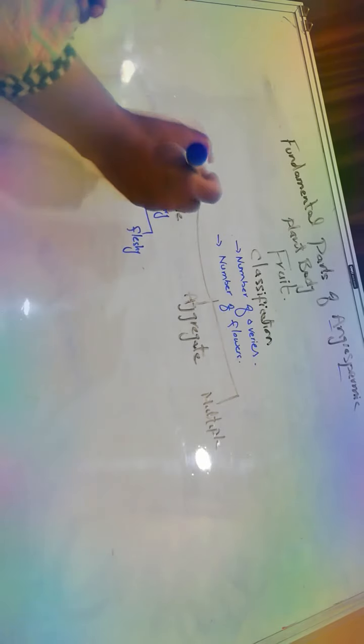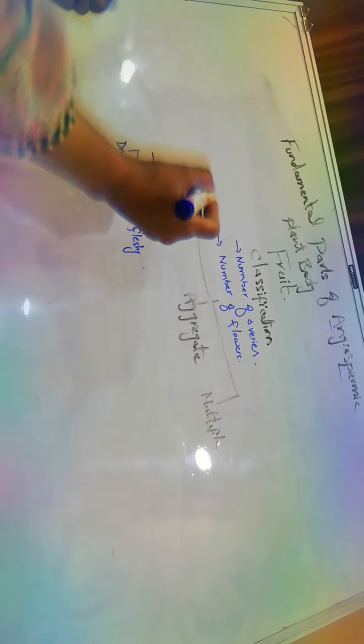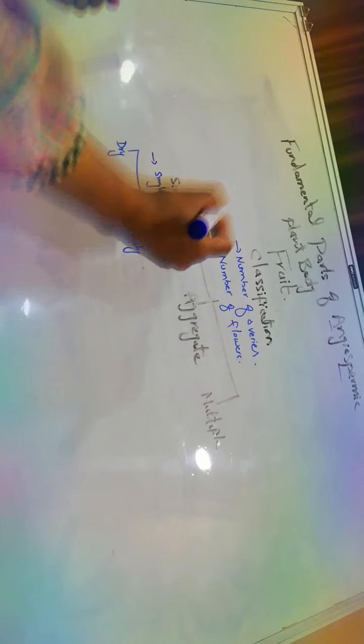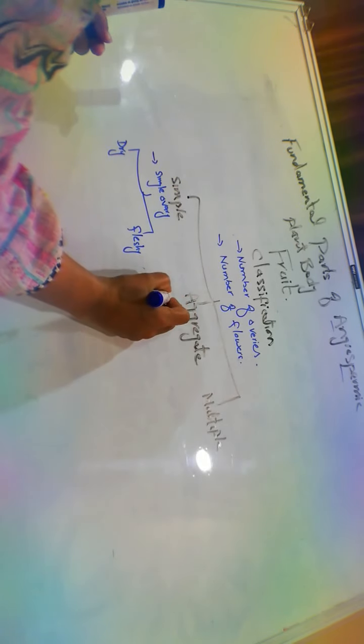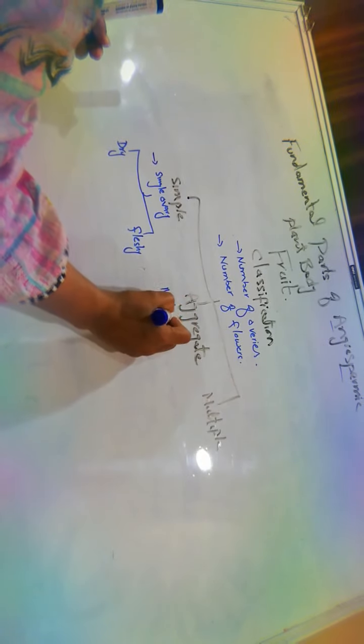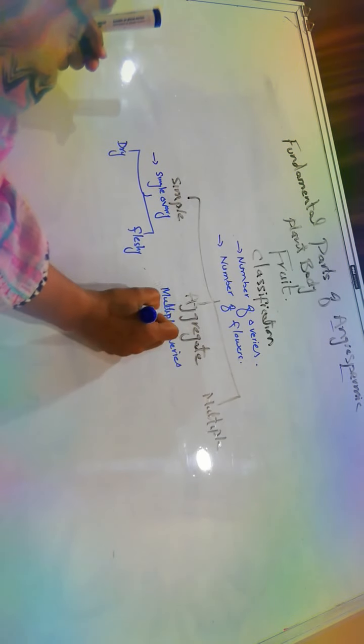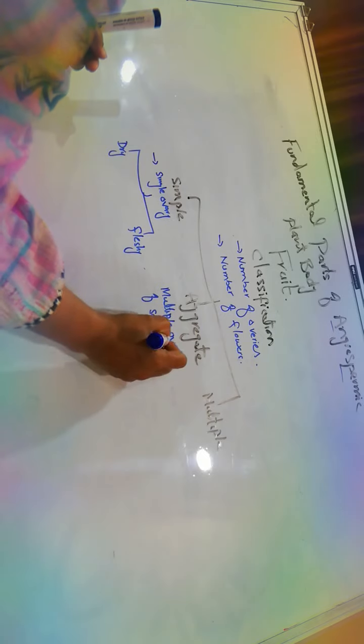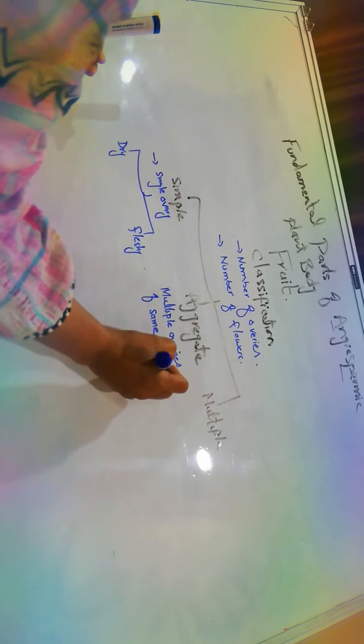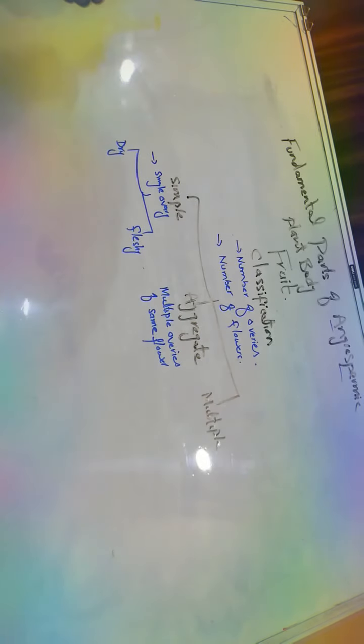While aggregate fruits, these are fruits which are developed from the multiple ovaries of the same flower. Then these are known as the aggregate fruits, or you can say that these are basically the collection of simple fruits and these are also known as the fruit flats.